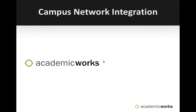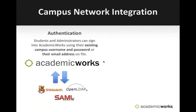Let's talk a little bit about Campus Network Integration. How does Academic Works integrate with your Campus Network? The first way might be through authentication. There are several different methods that Academic Works can use to authenticate your users into the system. If you're using a single sign-on type method, then students and administrators can sign into Academic Works using their existing campus username and password, or their email addresses. The Academic Works System will either ask permission from your servers, or send your users right into the Campus Portal where they can sign in and then be redirected back — depending on the type of authentication method that you choose upon implementation.